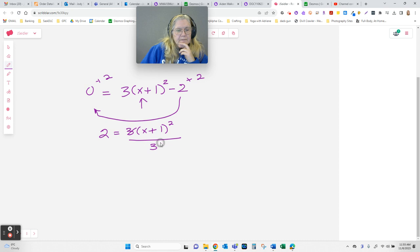So 2 = 3(x + 1)² all squared. I'm going to divide by 3. Do it to one side, I have to do it to the other.